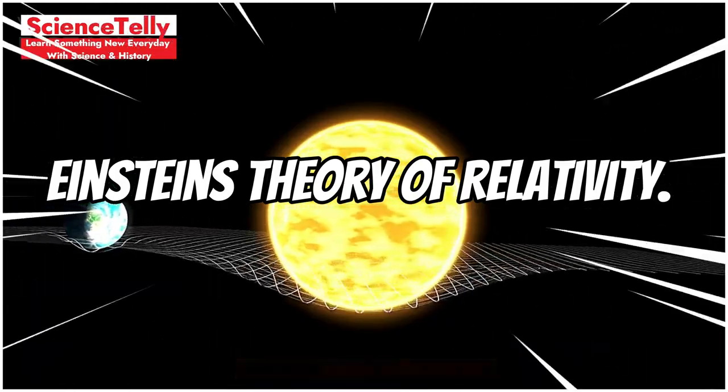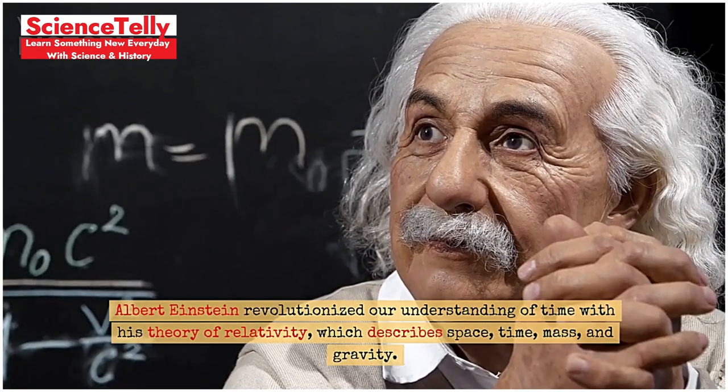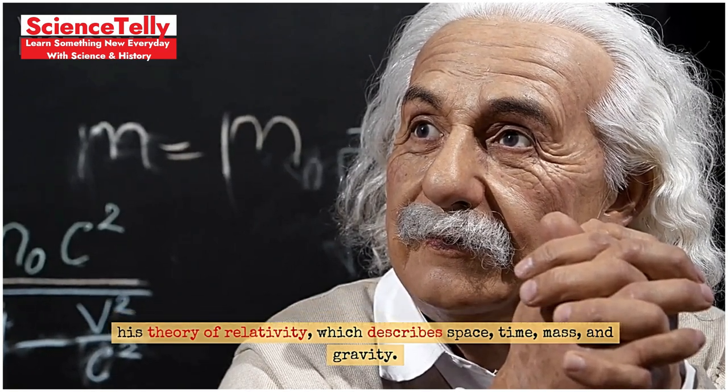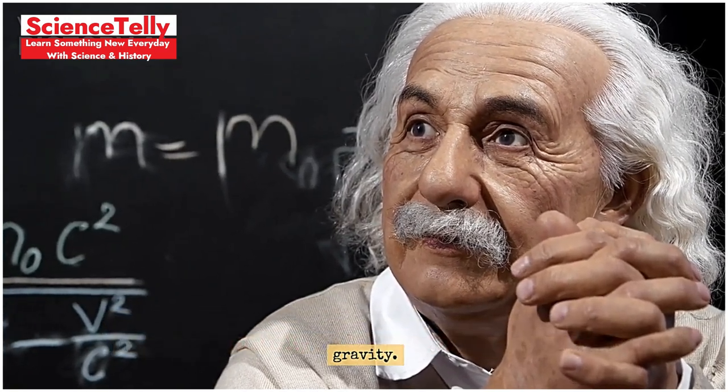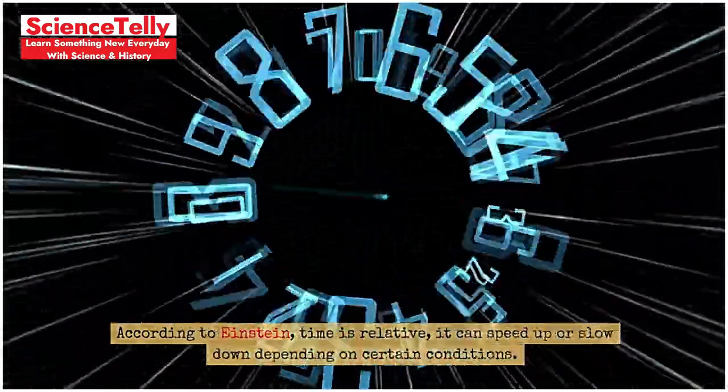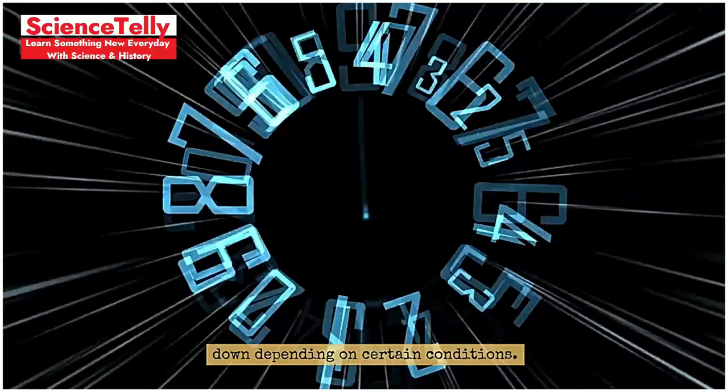Einstein's Theory of Relativity. Albert Einstein revolutionized our understanding of time with his theory of relativity, which describes space, time, mass, and gravity. According to Einstein, time is relative. It can speed up or slow down depending on certain conditions.